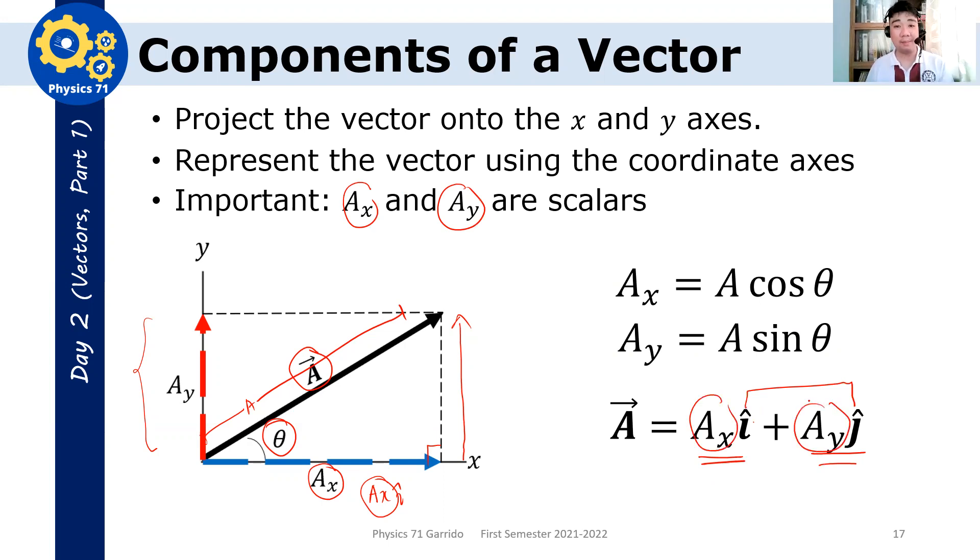So when you're asked in a problem, what is the y component of this vector? There should be no i-hat or j-hat. Otherwise, what you should write is ax vector is, let's say, 5 meters i-hat. That's acceptable. But what's not acceptable is ax equals 5 i-hat. This is wrong. Because you are equating a scalar and a vector. Just be careful with the notation. Is this clear?